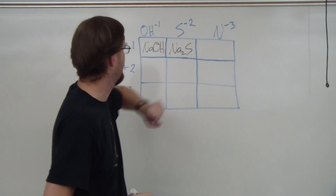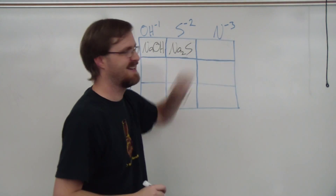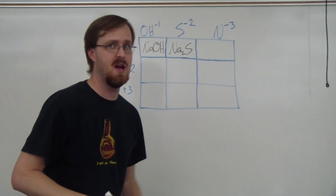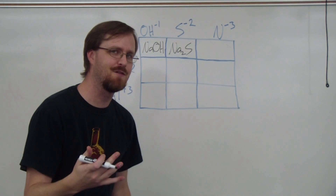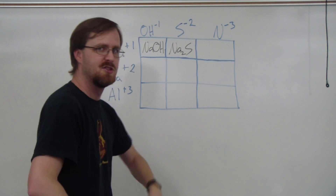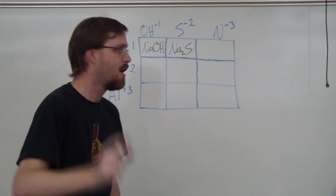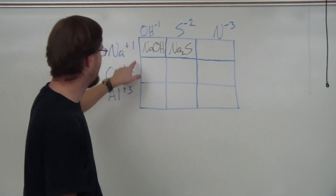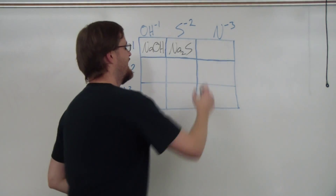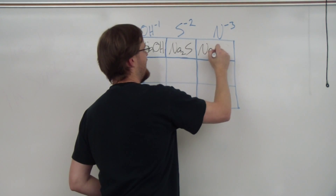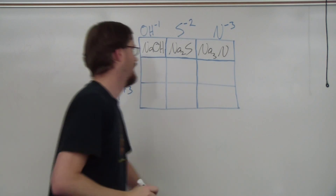Next category: we have sodium and nitrogen. We have a positive one and a negative three. So our lowest common multiple here is three. So I need three sodiums and one nitrogen — Na3N.